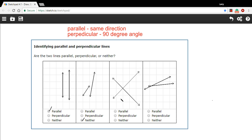These two lines here, they look like they cross at a 90 degree angle. I could get out my protractor to measure for sure, but I'm pretty sure that's a 90 degree angle. So we're going to call those perpendicular.